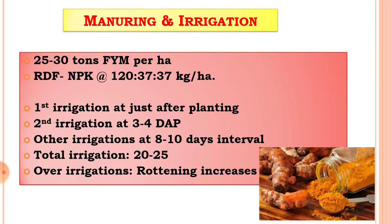Turmeric is a spice commercial crop and it is used for the preparation of turmeric powder. Now see the manuring and irrigation. For the fertilizer requirement of the turmeric crop, first see FYM — that is farm yard manure. Well-decomposed FYM is applied at the time of land preparation. The application rate is 25 to 30 tons per hectare.